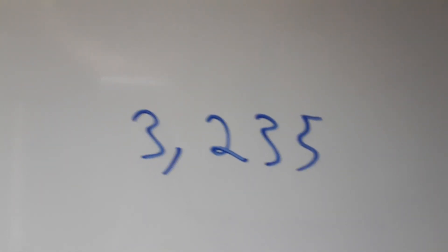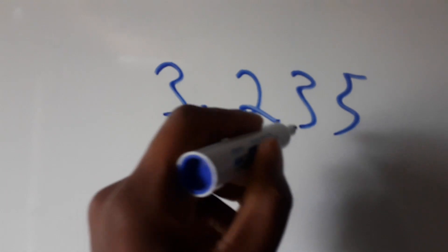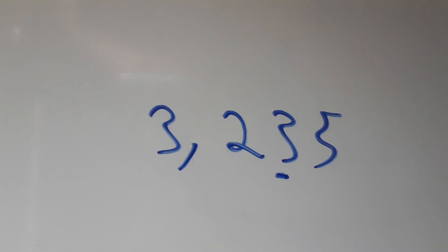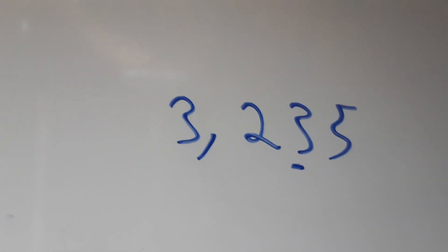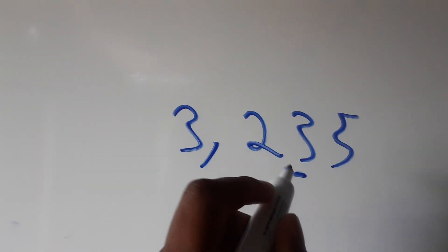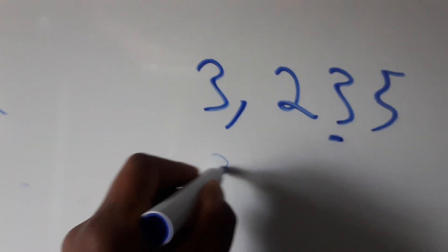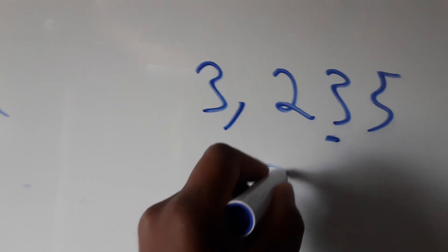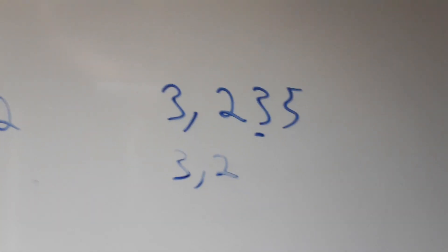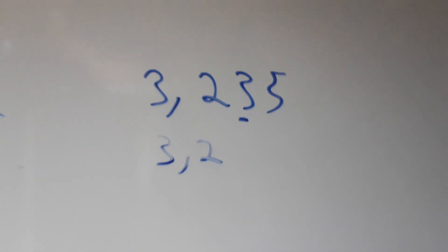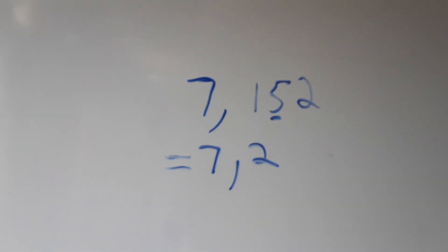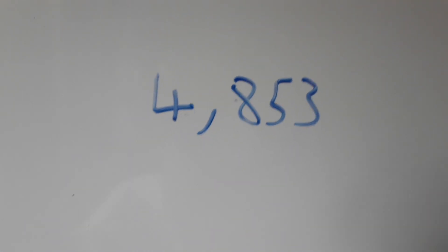Moving to the second example, we have 3.235. We look at the second number after the decimal. When rounding off to one decimal place, is three greater than four? No, it's not, so our answer remains 3.2. Three point two is our final answer.